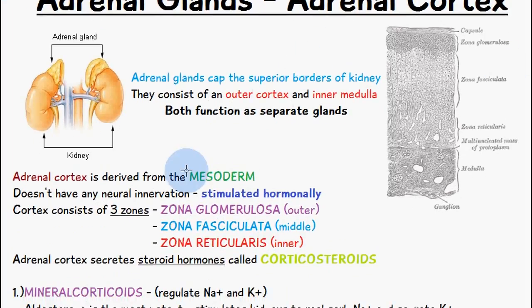If you're familiar with embryology, you know that the human body was initially derived from three germ layers: the ectoderm, mesoderm, and endoderm. The adrenal cortex is derived from the mesoderm and does not have any neural innervation, so it is actually stimulated hormonally.